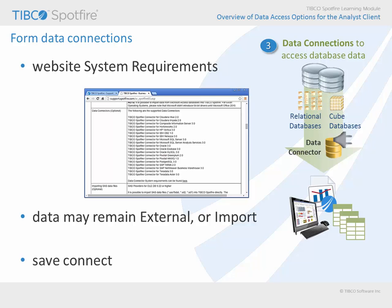In addition, data connections contain information about the data table selected for analysis, structural relations, joins, and cache settings, as well as data source details like the URL, server name, port number, database name, and user credentials. These details can be saved either as part of the analysis document or saved to the Spotfire library.